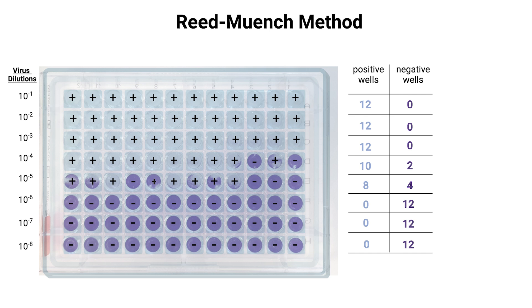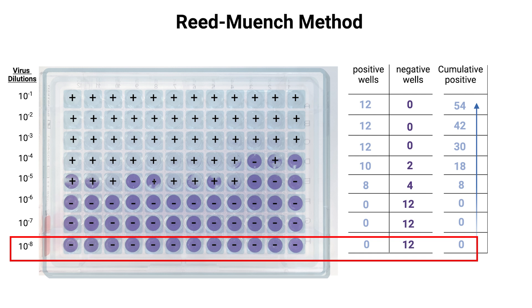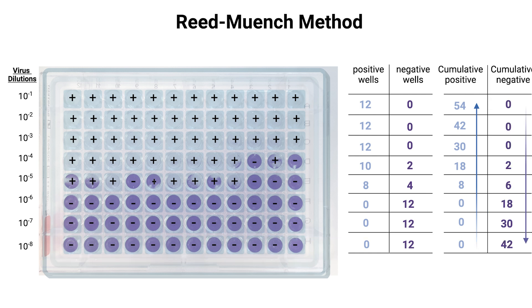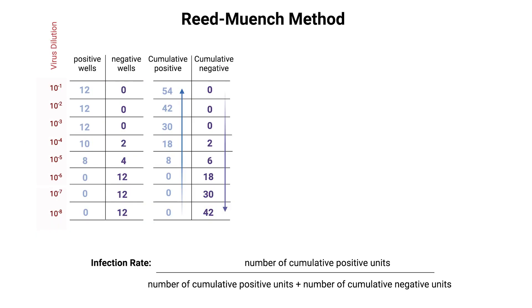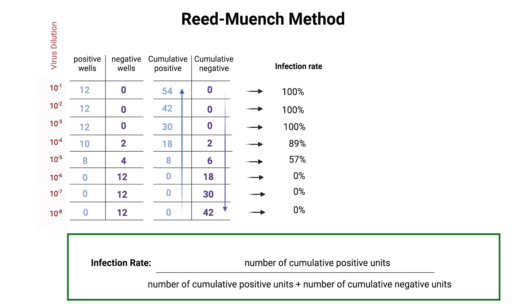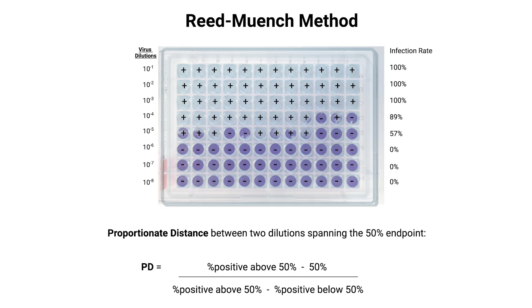Next, we calculate the cumulative positive counts. We start from the highest dilution — the most diluted sample — and sum the number of positive wells as we move to each lower dilution. Similarly, we calculate the cumulative negative counts. Starting from the highest dilution, we sum the number of negative wells as we move to each lower dilution. By calculating these cumulative counts, we can then determine the infection rates using this formula. These infection rates are used in the subsequent steps to identify the 50% infection endpoint and calculate the proportionate distance.